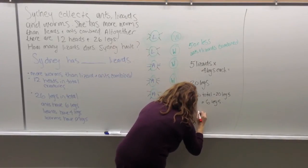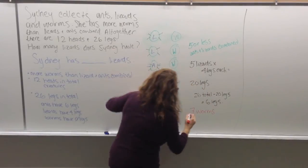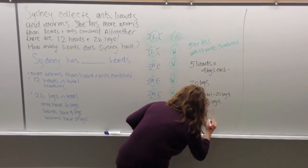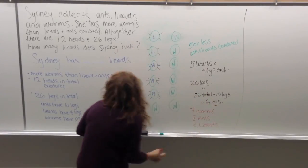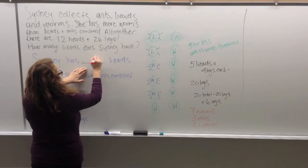So what do we know from this? We have, or Sydney has 7 worms, 1, 2, 3 ants, and 1, 2 lizards. So let's go back to our question. Sydney has 2 lizards.